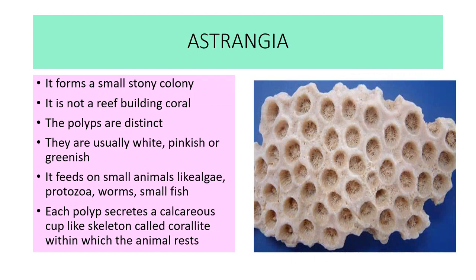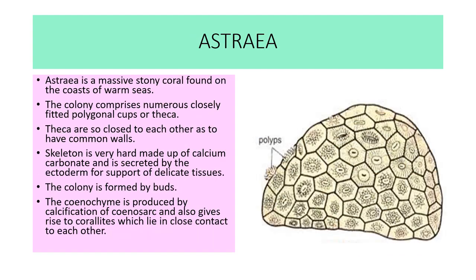Next example is Astrangia. It forms small stony coral and is not a reef-building coral. The polyps are distinct. They are usually white, pinkish, or greenish. It feeds on small animals like algae, protozoa, worms, and small fishes. Each polyp secretes a calcareous cup-like skeleton called a corallite, within which the animal rests.